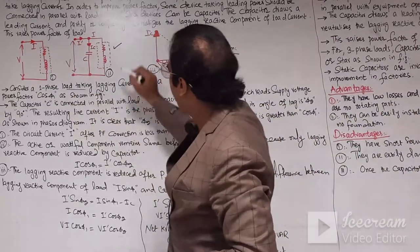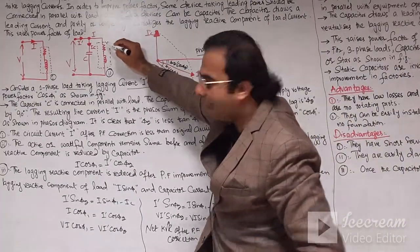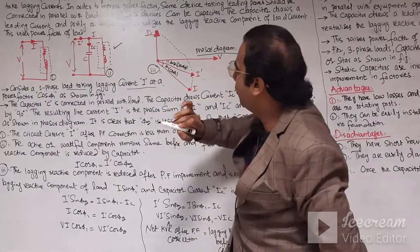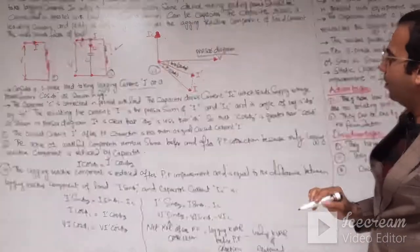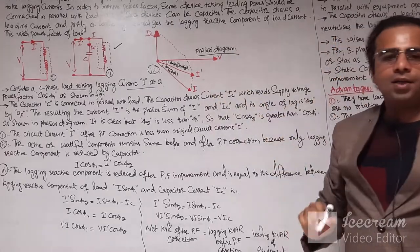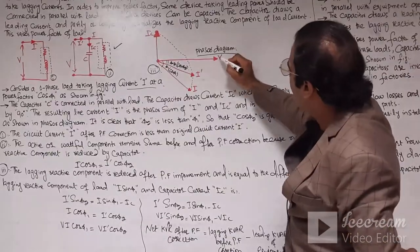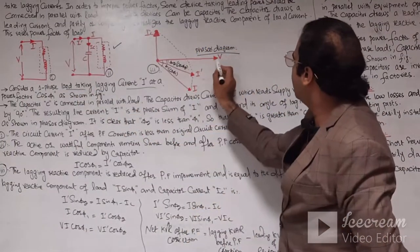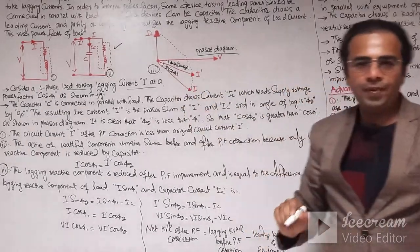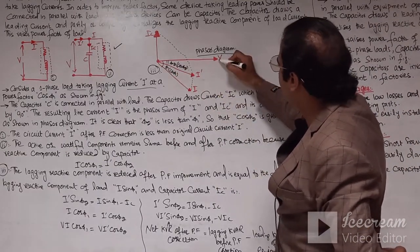Consider a single phase load taking the lagging current I at a power factor of cosine phi, as shown in the figure. As you can see from this diagram, this is the single phase inductive load and we are going to connect the capacitor in parallel across it. In the inductive load, voltage leads the current, or the current is lagged behind the voltage.